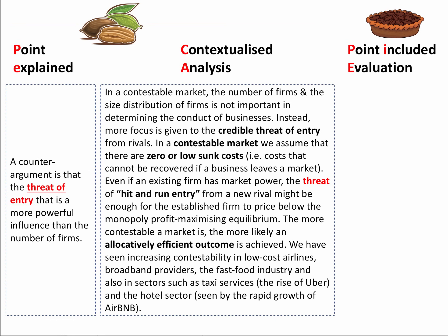To build the analysis: in a contestable market, we assume there are zero or low sunk costs. Even if an existing firm has market power, the threat of so-called hit-and-run entry from a new rival might be enough for the established business to price below the monopoly profit-maximising equilibrium. The more contestable the market is, the more likely an allocatively efficient outcome is achieved — presumably good news from a consumer welfare point of view. We've seen increasing contestability in low-cost airlines, broadband providers, the fast-food sector, and also in sectors such as taxi services and hotels — Uber and Airbnb, for instance.